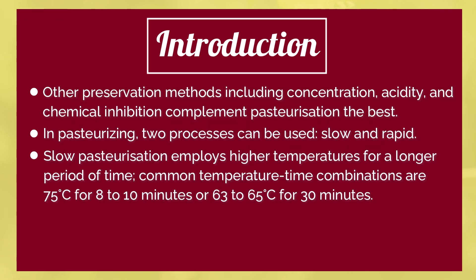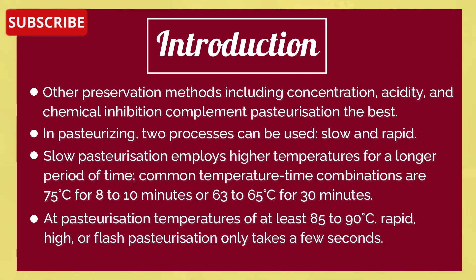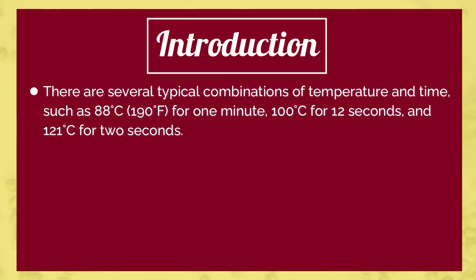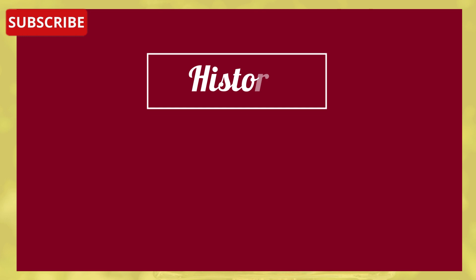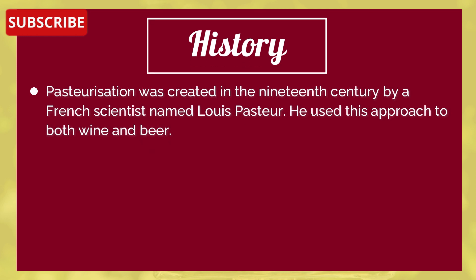Slow pasteurization employs higher temperatures for a longer period of time. Common temperature-time combinations are 75°C for 8 to 10 minutes, or 63 to 65°C for 30 minutes. At pasteurization temperatures of at least 85 to 90°C, rapid high or flash pasteurization only takes a few seconds. Typical combinations include 88°C for one minute, 100°C for 12 seconds, and 121°C for two seconds.